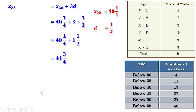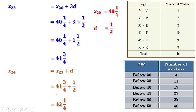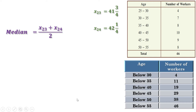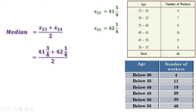Now let us find the 24th term. The 24th term is the 23rd term plus common difference. The 23rd term is 41 and 3 by 4, and common difference is 1 by 2. So this is 41 and 3 by 4 plus 1 by 2. 3 by 4 plus 1 by 2 is 1 and 1 by 4, so 41 plus 1 and 1 by 4 is 42 and 1 by 4. So we have the two middle terms. Median is half the sum of the middle terms: 23rd term plus 24th term divided by 2. That is 41 and 3 by 4 plus 42 and 1 by 4 divided by 2. 3 by 4 plus 1 by 4 is 1; 1 plus 41 is 42; 42 plus 42 divided by 2 is 42. That means the median is 42.